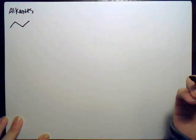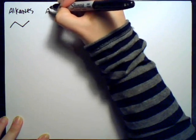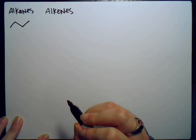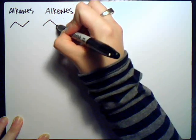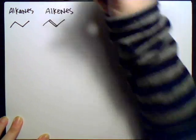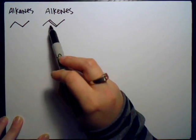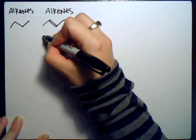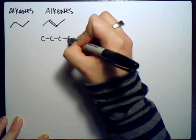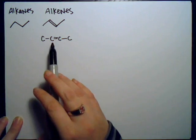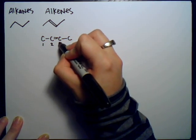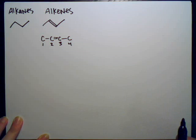If they have a double bond, they are called alkenes. For example, drawn out it would look like this — you can see that the double bond is between carbons two and three.